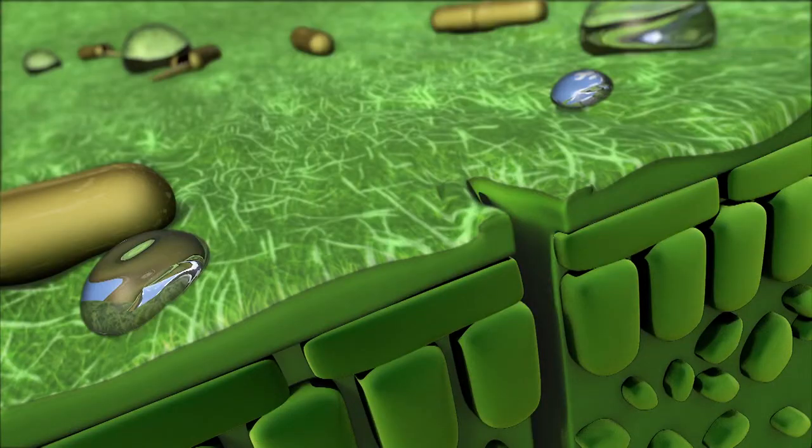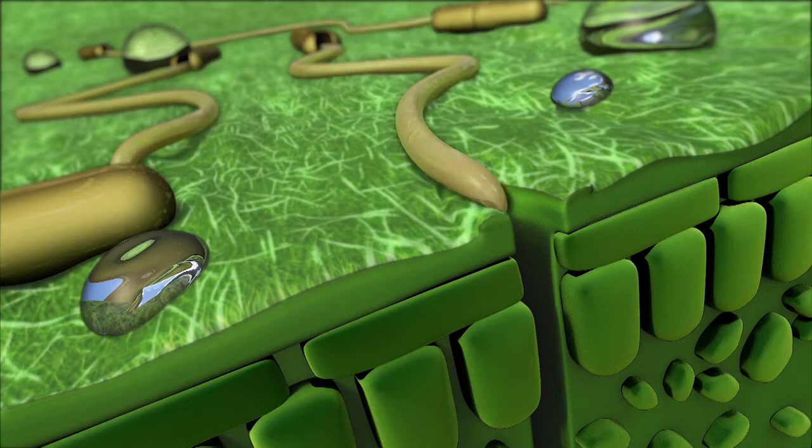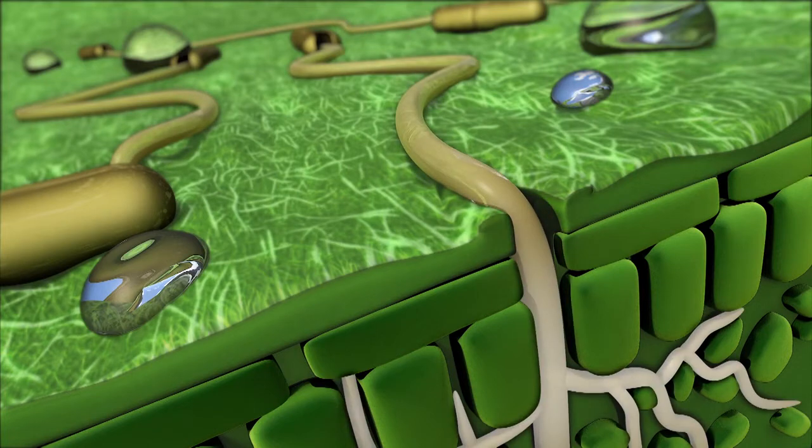and form a germ tube. The germ tubes then penetrate into the interior of the leaf through openings between the leaf cells called stomata.